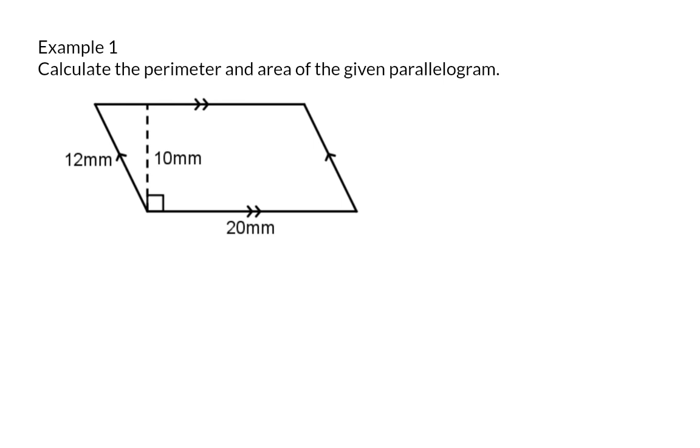Example 1. Calculate the perimeter and area of the given parallelogram. Starting with the perimeter of this parallelogram, I know that the perimeter is the sum of all the sides. So here we have a side of 12 millimeters, another one of 20, a second 12 and a second 20, because we know that the opposite sides of a parallelogram are equal. The perimeter will now be 64 millimeters.